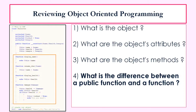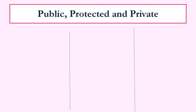Before we move on, what we can do with this code is change the access rights that these attributes have. Here we've got them all protected, but we can choose whether we want them to have protected, public, or private access rights. To describe what these access rights mean in object-oriented programming in PHP, I'm going to be using an analogy.